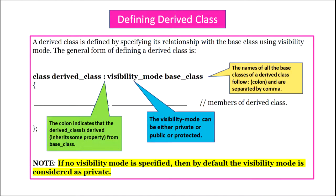A derived class is defined by specifying its relationship with the base class using visibility modes. The general syntax is: the keyword class, then the derived class name, colon, visibility mode, and then the name of the base class. The colon indicates that the derived class is derived from the given base class. The visibility modes can be private, protected, or public. We can give the name of more than one base class, separated by commas. Please remember that if no visibility mode is specified, then by default the visibility mode is considered as private.